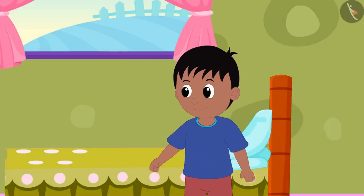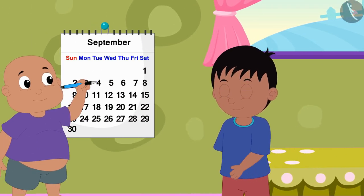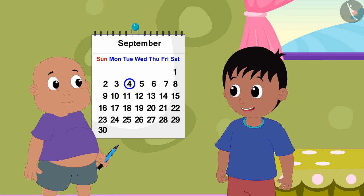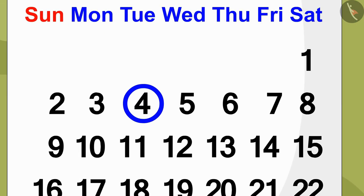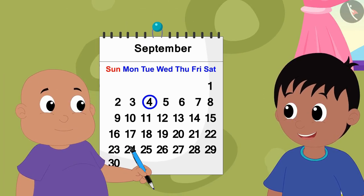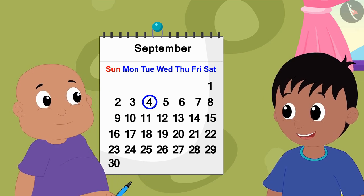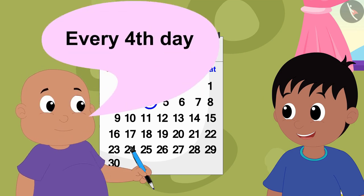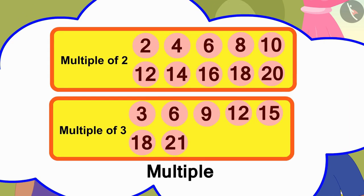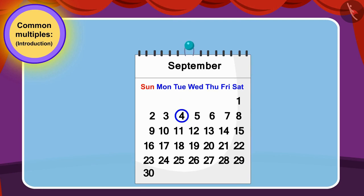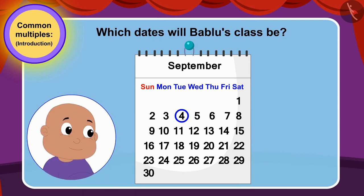Raju has come to Bablu's house. When he reached Bablu's house, he saw that Bablu was drawing circles on some dates on his home calendar like this. When Raju asks him what he is doing, Bablu tells him that he has enrolled in a math class and his class will be every fourth day. Can you use multiples of 4 to indicate on which dates Bablu's class will be?